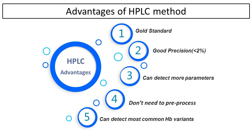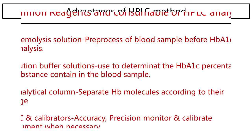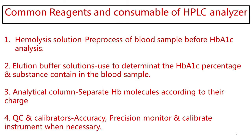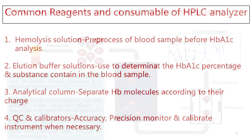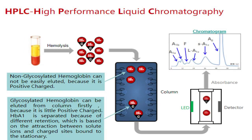Common reagents and consumables of an HPLC analyzer include: hemolysis solution, used for pre-processing of the blood sample before HbA1c analysis; elution buffer solutions, used to determine the HbA1c percentage and substance content in the blood sample; an analytical column, which separates Hb molecules according to their charge; and QC and calibrators, used to verify accurate operation and calibrate the instrument when necessary.